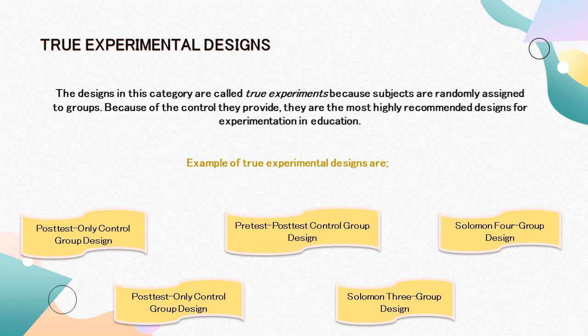Next is true experimental designs. The designs in this category are called true experiments because subjects are randomly assigned to groups. Because of the control they provide, they are the most highly recommended designs for experimentation in education. Examples include the randomized subjects posttest-only control group design, which is one of the simplest yet one of the most powerful of all experimental designs. It has two essential elements necessary for maximum control: randomization and a control group.